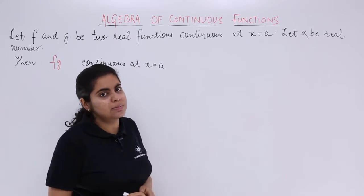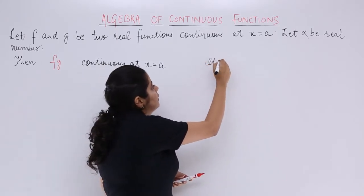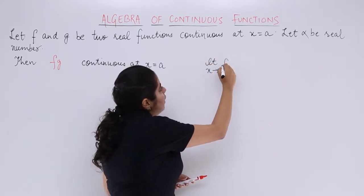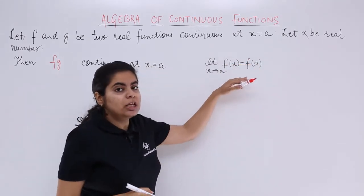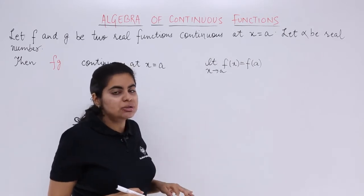Now individually they are continuous means what? It means that limit x tends to a for f(x) gives me f(a) because the limit should be equal to the value of the function at that point for continuity.